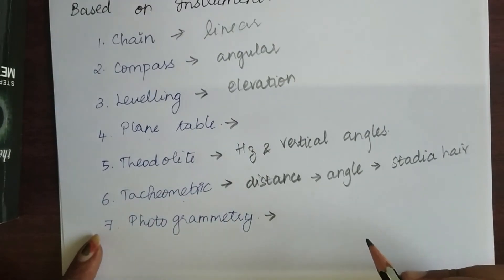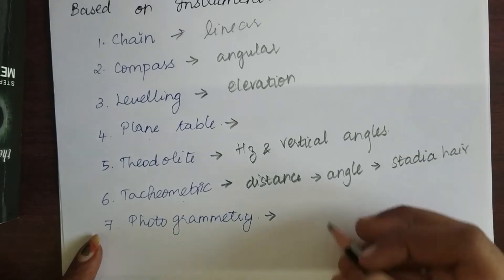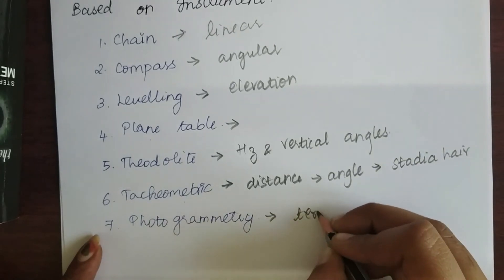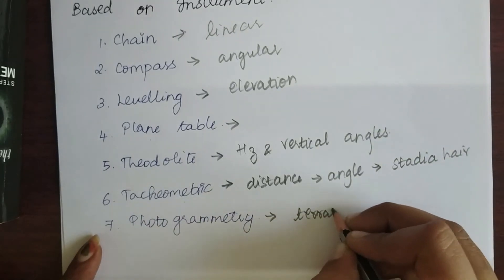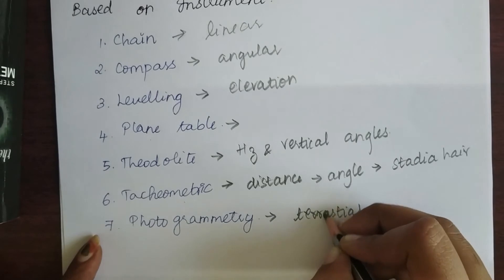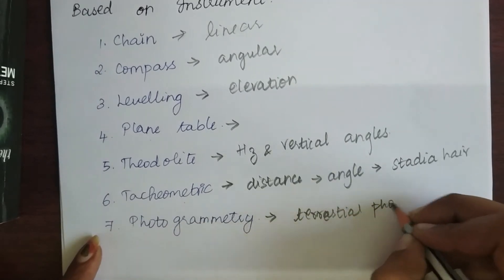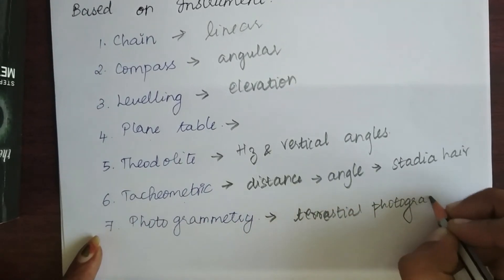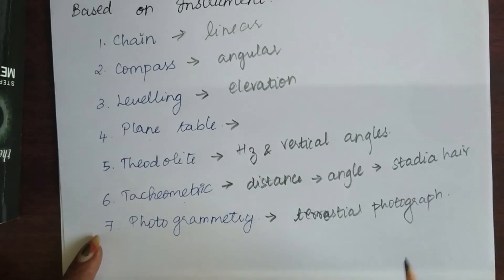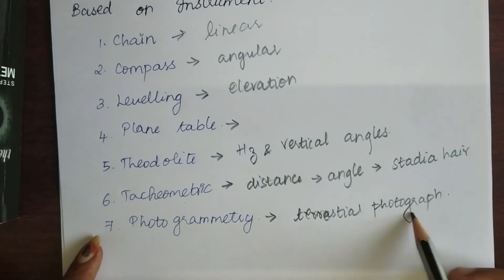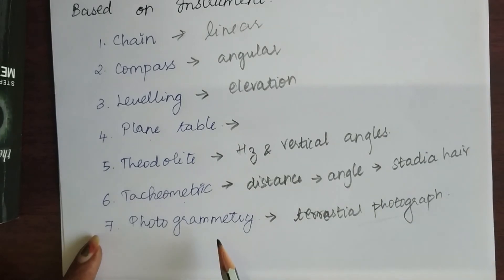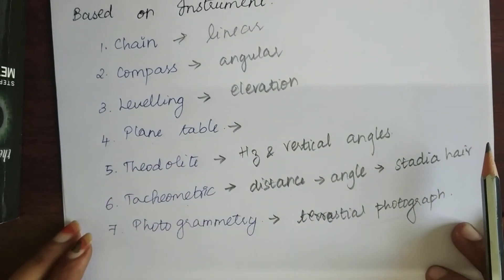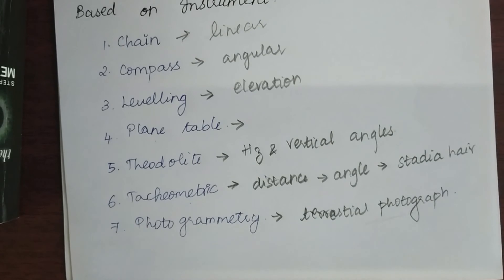Next is photogrammetry. This is an upcoming branch of surveying. In this, we use terrestrial photographs, and the information we want is derived from these photographs using the principles of photogrammetry. So these are the types of surveying. Please do like, share, and subscribe for more videos. Thank you so much for watching.